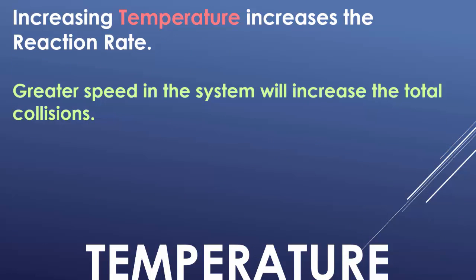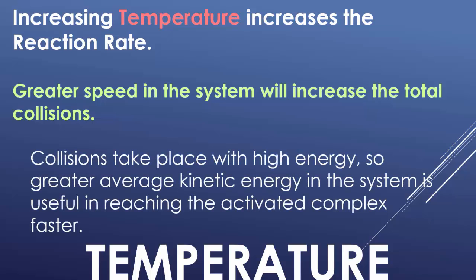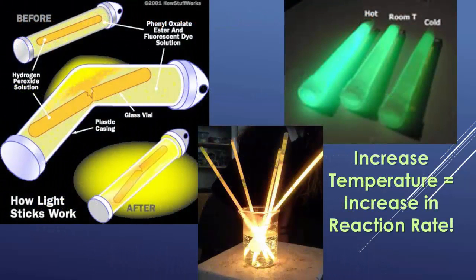Increasing temperature will also affect the rate of reaction, because you're making those particles move faster — faster movement means more collisions and a faster rate of reaction. Temperature is the average kinetic energy; as you increase temperature, you increase the speed of all particles so they bounce into each other at faster rates. You can test this at home with glow sticks: stick one in the freezer, leave one at room temperature, and put one in really hot water. The hot water glow stick will glow the brightest, but it will die faster because it uses up its reactants much faster.